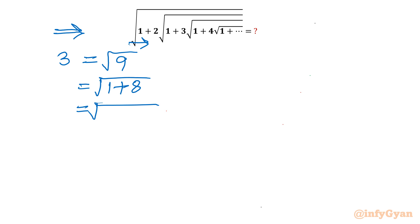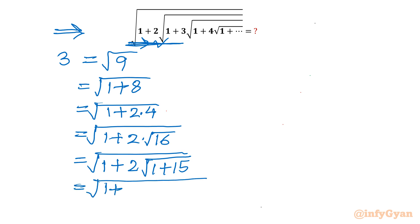So 1 is done now. Now only try to match with this order. 8 can we write 2 times 4? So yes, 2 times 4. Now 2 is also done. Now 4 can we write square root 16, because square root is needed. 1 plus 2 times square root of 16. Now square root of 16 is there, so we can write 1 plus 2 times - 16 can we write in terms of 1 plus 15.